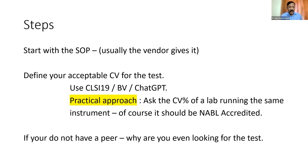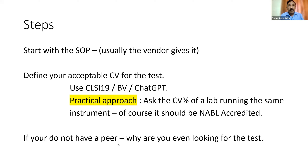Define your acceptance criteria before you start. How do you get the CV percentage for acceptance? You can use CLSI guidelines, biological variation databases, or ChatGPT — but a more practical approach is to ask your neighbor labs running the same test on the same platform what CV percentage they are achieving. You should be able to get that or better. Pick a quality lab running the same platform and use their CV as your benchmark. If you don't have a peer, consider whether you really need to introduce that test.